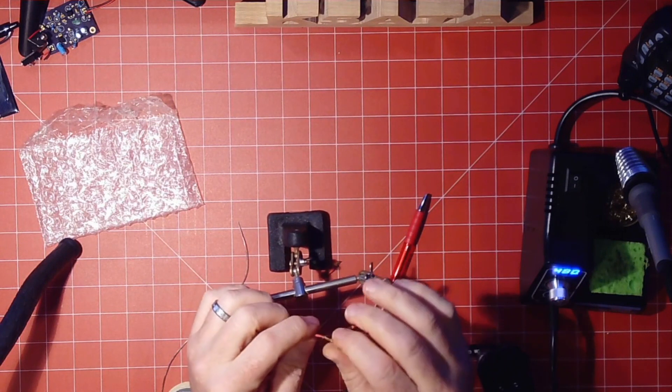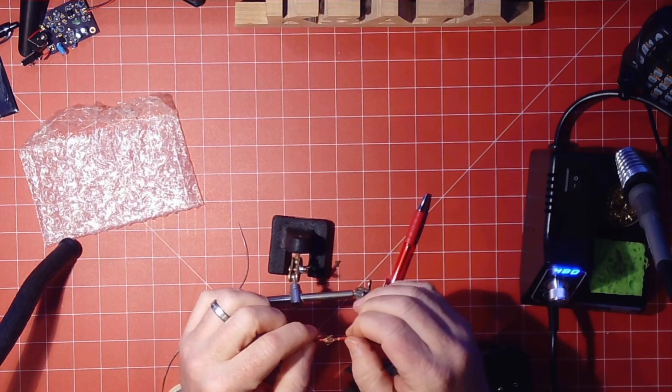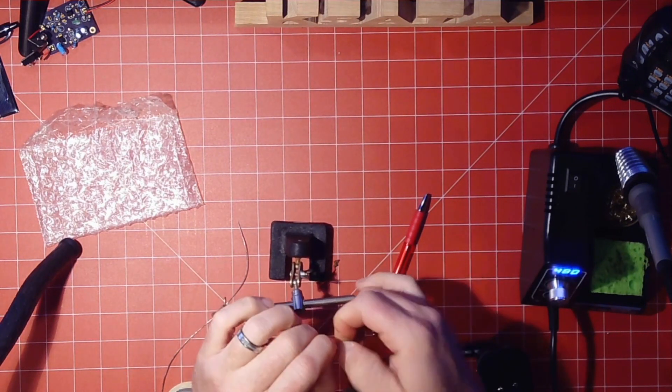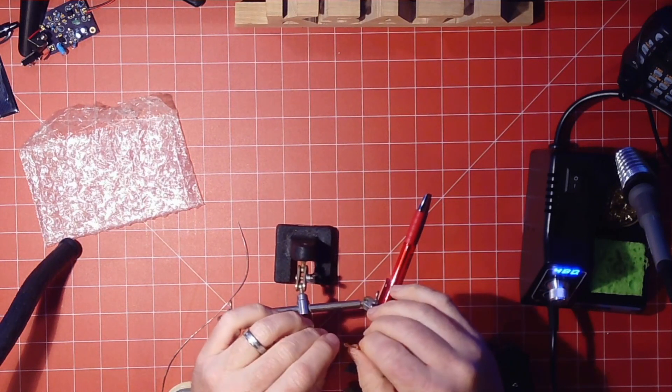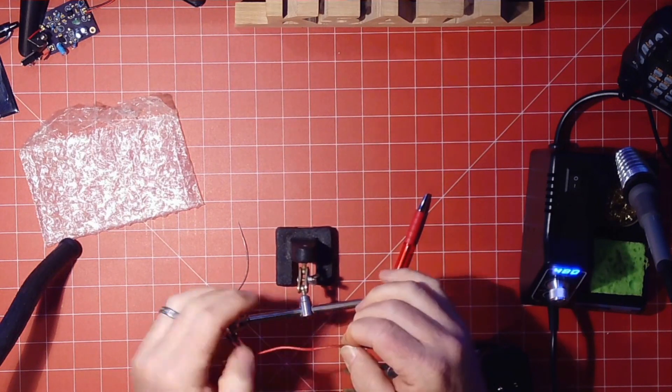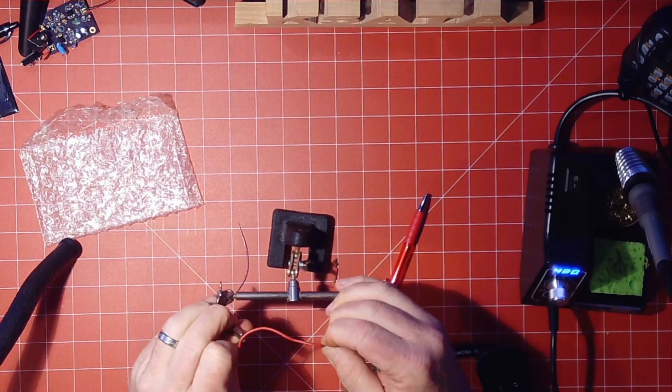let those come undone. Just kind of put them together like that and you can just twist those with your fingers. Take that one out. You need to be able to actually turn one of the wires here.